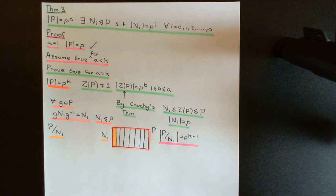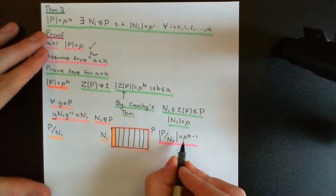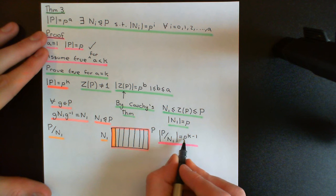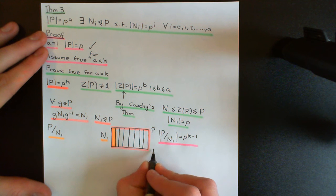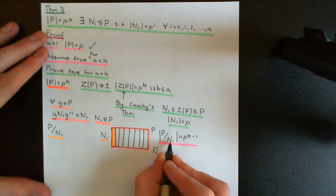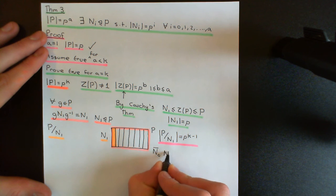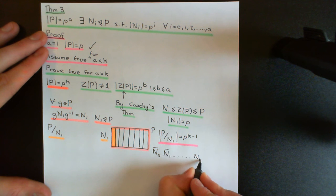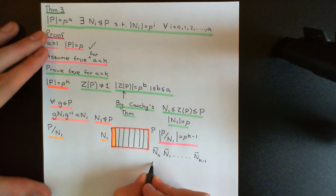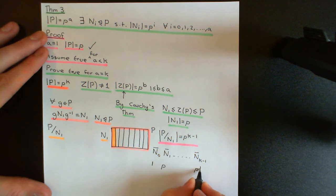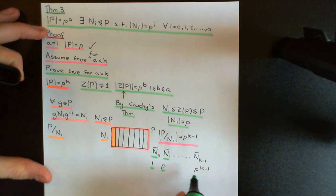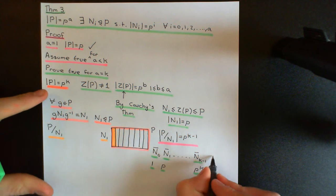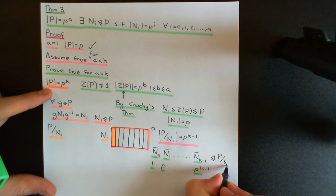You can now use the inductive assumption to say that Theorem 3 will be true for this quotient group. So for this quotient group, it will be possible to find normal subgroups of every possible size: a normal subgroup of size p to the 0, p to the 1, all the way up to p to the k minus 1. I'll call these with bar notation: N_0-bar of size 1, N_1-bar of size p, up to N_{k-1}-bar of size p to the k minus 1. Remember, these barred subgroups are normal subgroups inside of the quotient group P/N_1.